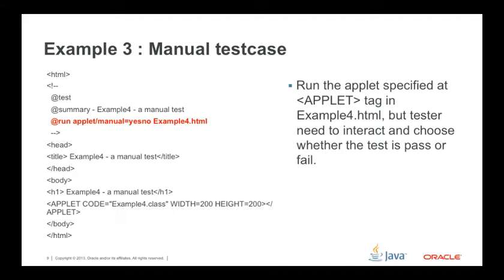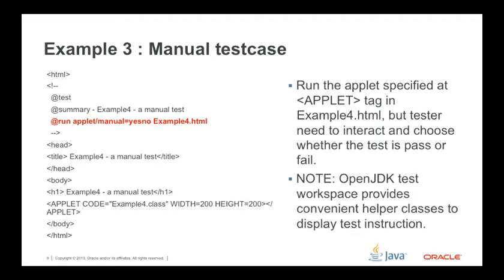For a Manual Test Case, the tester needs to interact with and choose whether the test is pass or fail. Note that the OpenJDK test workspace provides convenient helper classes to display test instructions and keep a consistent look and feel.